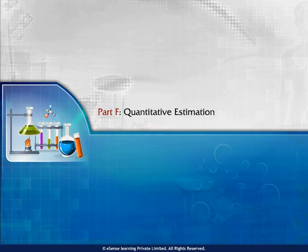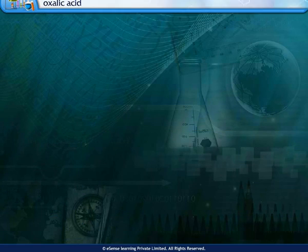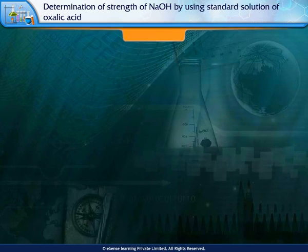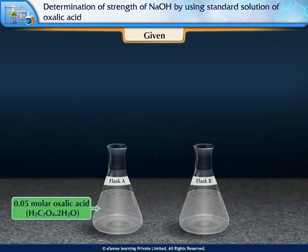Part F: Quantitative Estimation — Determination of strength of sodium hydroxide using a standard solution of oxalic acid. Our aim is to determine the molarity and strength in grams per liter of the given sodium hydroxide solution. We are given two flasks labelled A and B: Flask A contains 0.05 molar oxalic acid and Flask B contains sodium hydroxide solution.